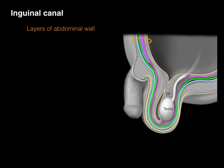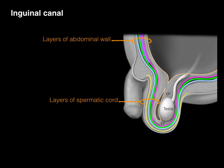The layers of the abdominal wall, shown with that orange semicircle, match the layers of the spermatic cord — the same colors and same layers that make up the spermatic cord and eventually the scrotal sac. There's the peritoneal cavity, and its extension is called the processus vaginalis — a little sac that came with the testis through the wall. But the testis is not inside the processus vaginalis; it's in the extraperitoneal fascial layer. The processus vaginalis is a pocket of mesothelium that surrounds the testis with a little fluid.